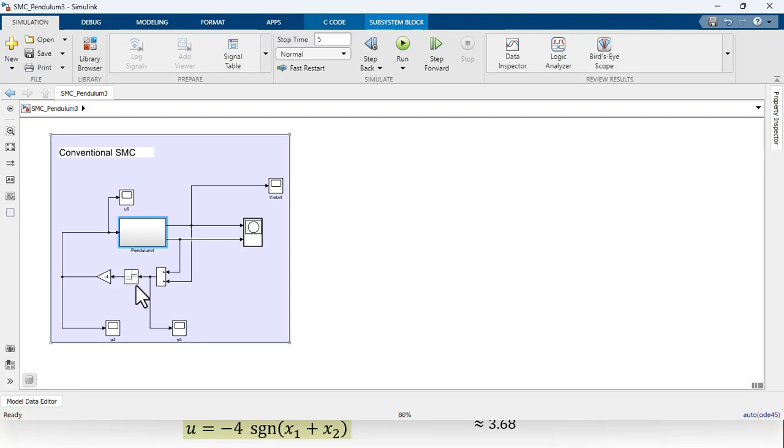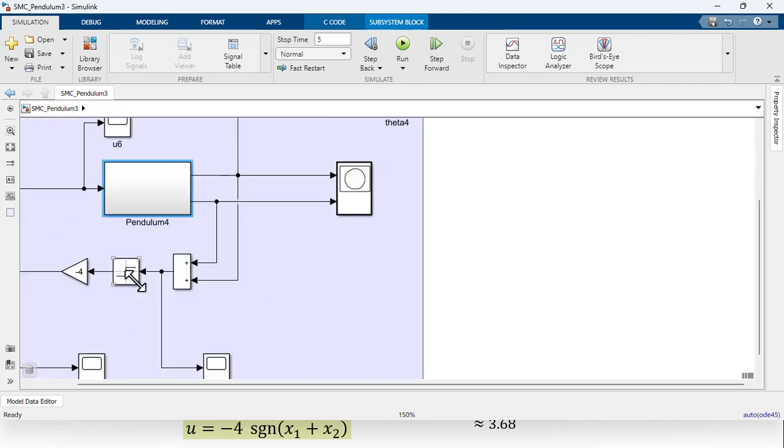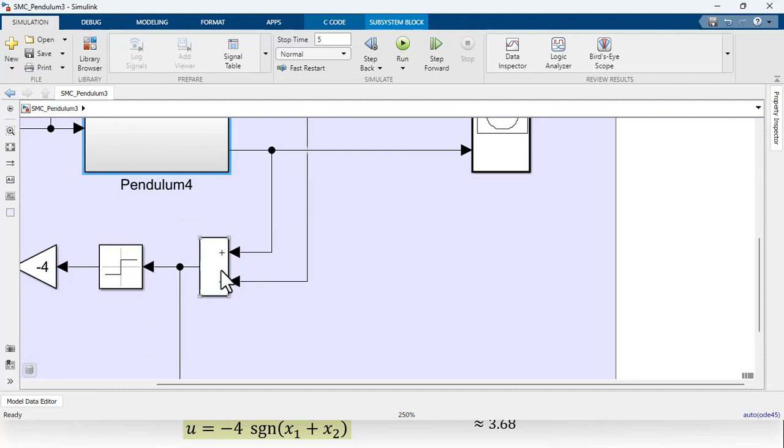We are using this signum function which is over here, and the sliding surface is simple. We had taken a to be equal to 1, so s is equal to x1 plus x2, and this is signum of s, and then this is minus 4.